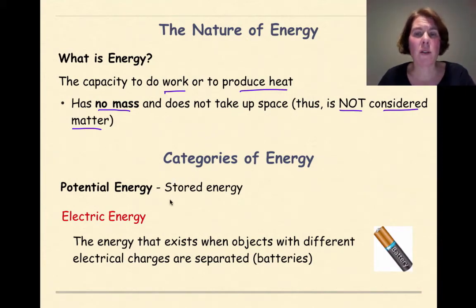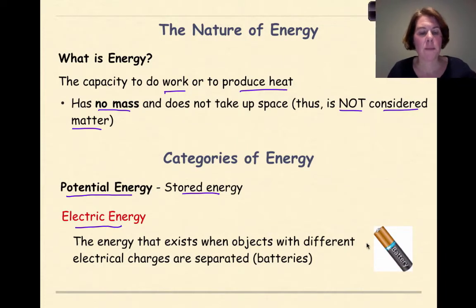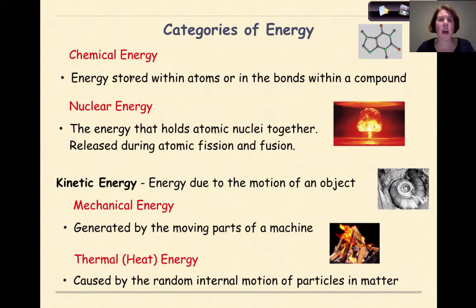There's two basic categories of energy. The first one is potential energy, which we refer to as stored energy. One type of potential energy is electric energy, the energy that exists when objects with different electrical charges are separated. A good example is a battery. Another type is chemical energy, the energy stored within atoms or in the bonds within a compound. The final one is nuclear energy, and we're going to talk about this one in a lot more detail. This is the energy that holds atomic nuclei together and is released during atomic fission and fusion.